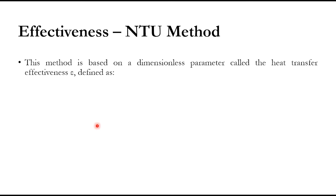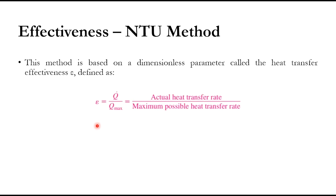The Effectiveness-NTU method is based on a dimensionless parameter called heat transfer effectiveness, defined as ε = q̇/q̇_max — the ratio of actual heat transfer rate to the maximum possible heat transfer rate. We need to calculate how much heat transfer can be done in a heat exchanger and what the actual rate is; their ratio gives ε, and this value will always be less than 1.